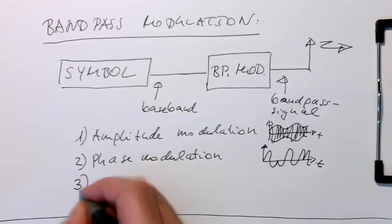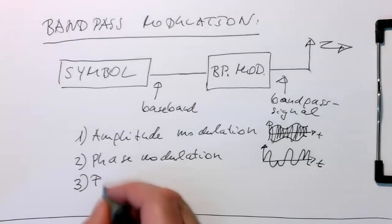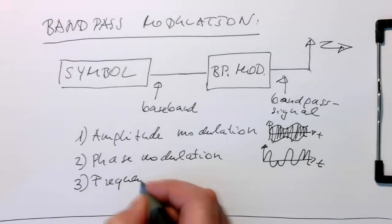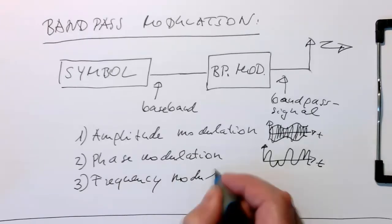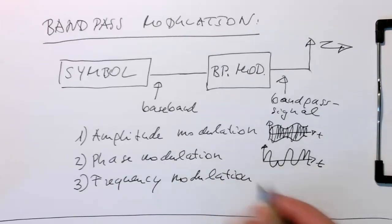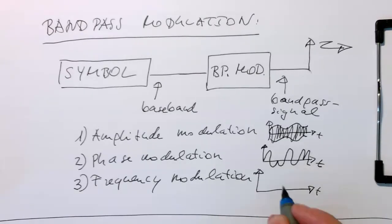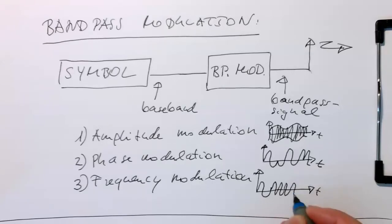And then the third thing is frequency modulation. That's obviously what the name says—we are changing the frequency of the carrier. We have a frequency like that, and then suddenly it becomes faster, and then it becomes slower again. We're transmitting the information by changing the frequency.